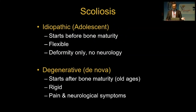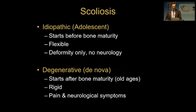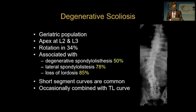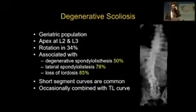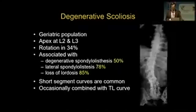However, in adult degenerative scoliosis, it is a rigid deformity and the patients are mostly coming to surgeons with significant pain and neurological symptoms. It's a geriatric population. There is additional rotation. The apex is mostly at L2 and L3, and there are additional spondylolisthesis, lateral spondylolisthesis, or loss of lordosis — coronal and sagittal imbalance are present together.